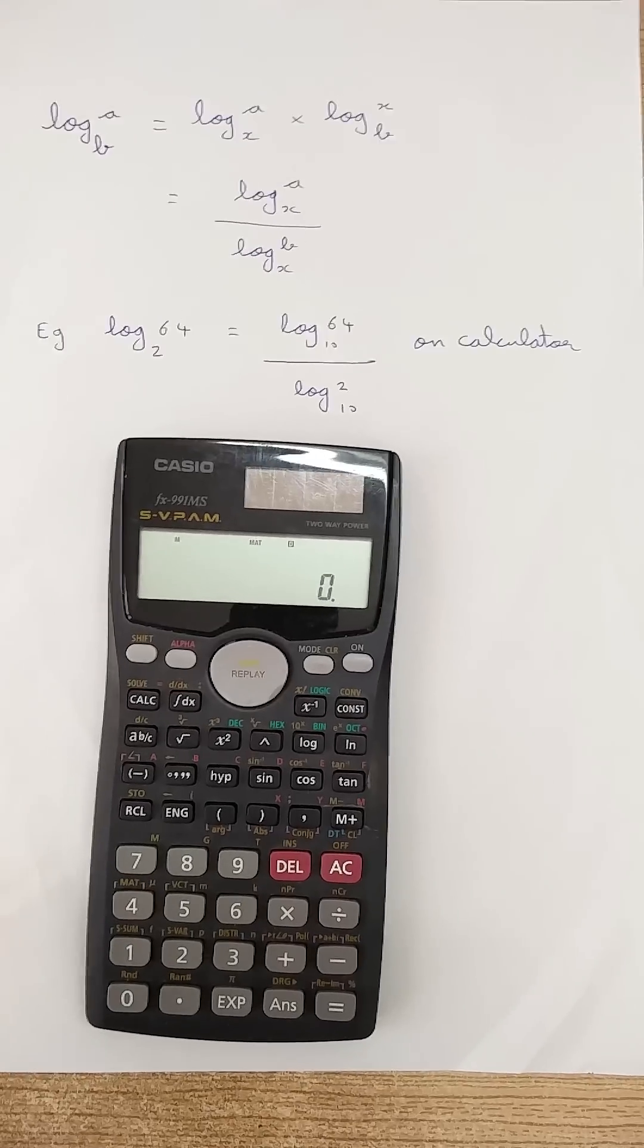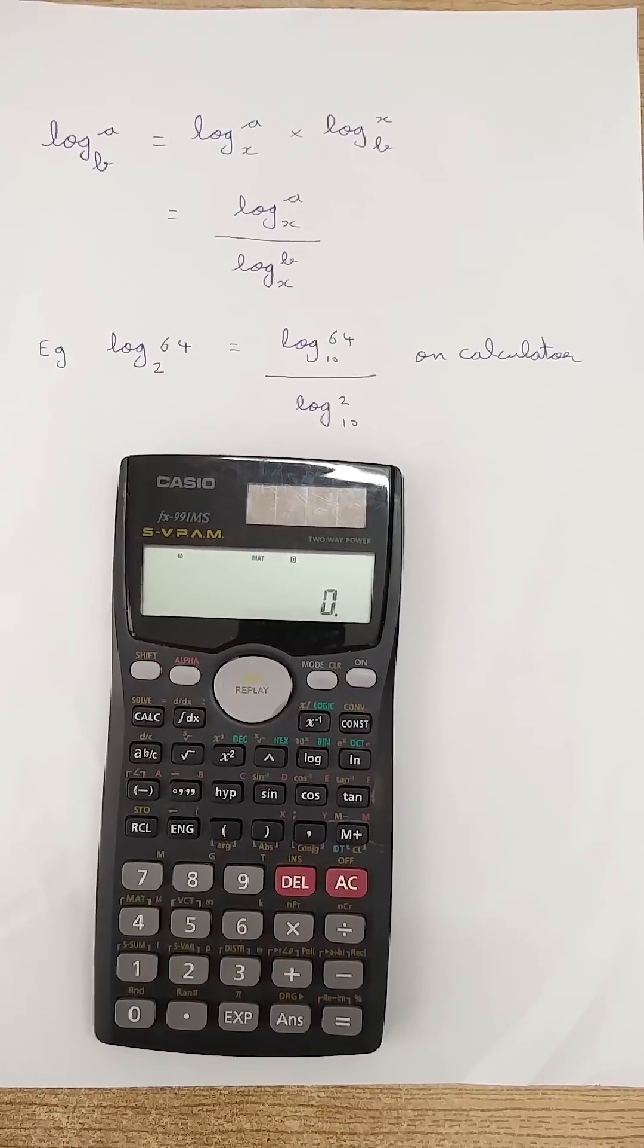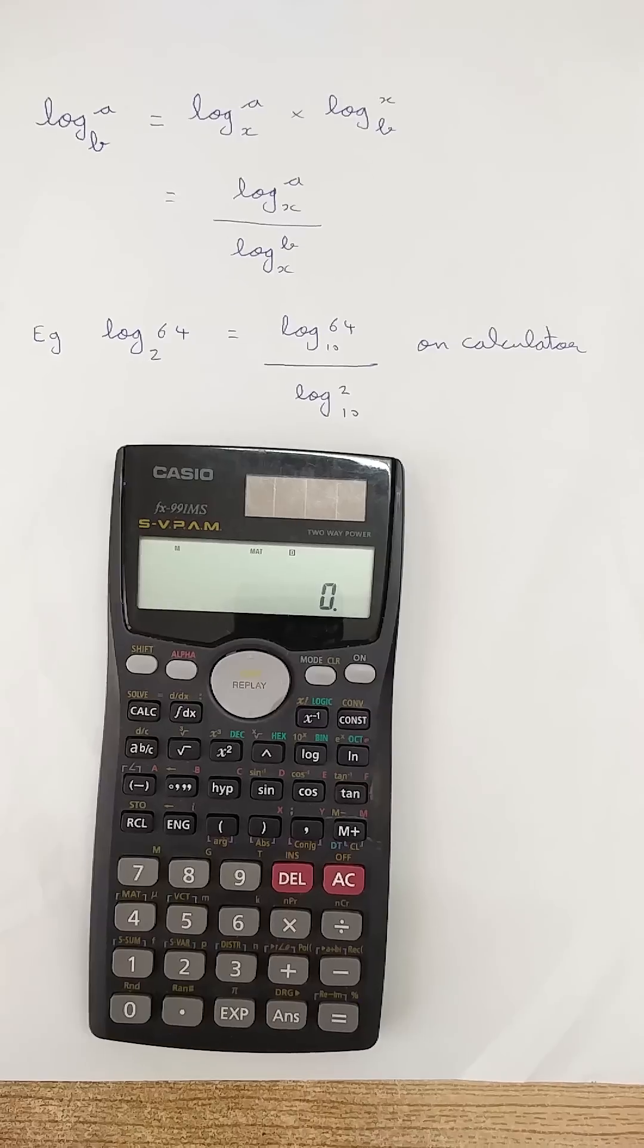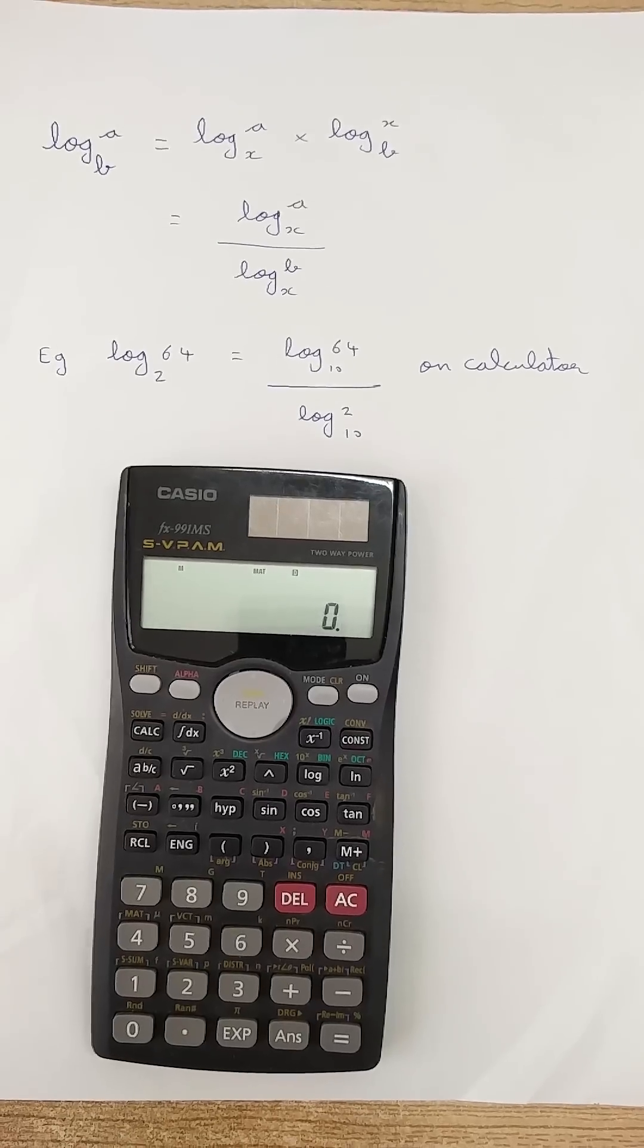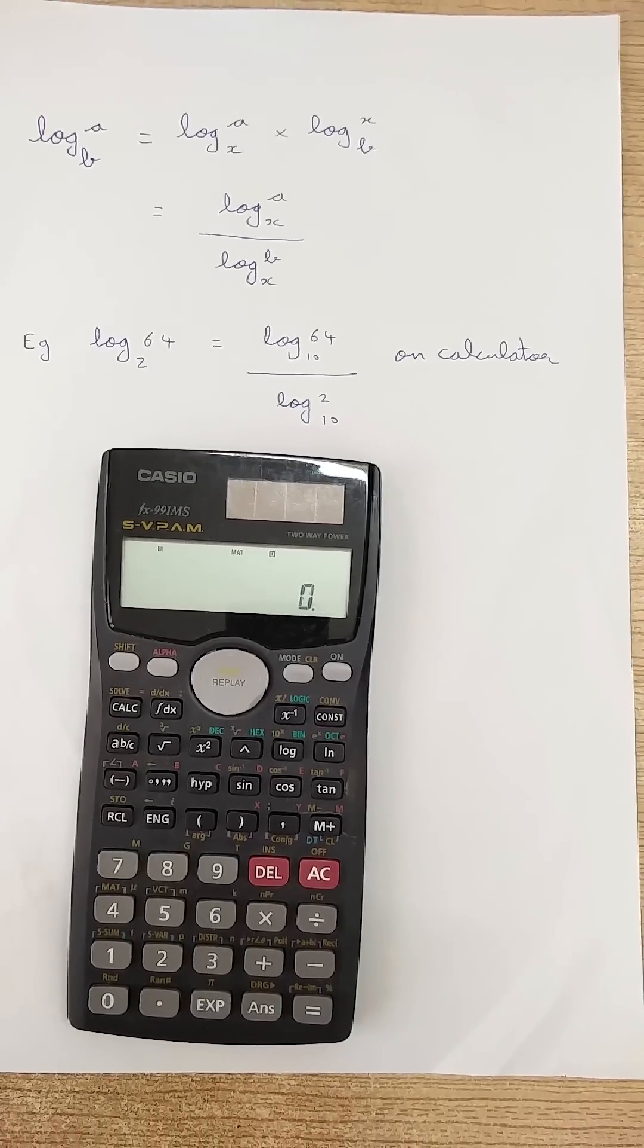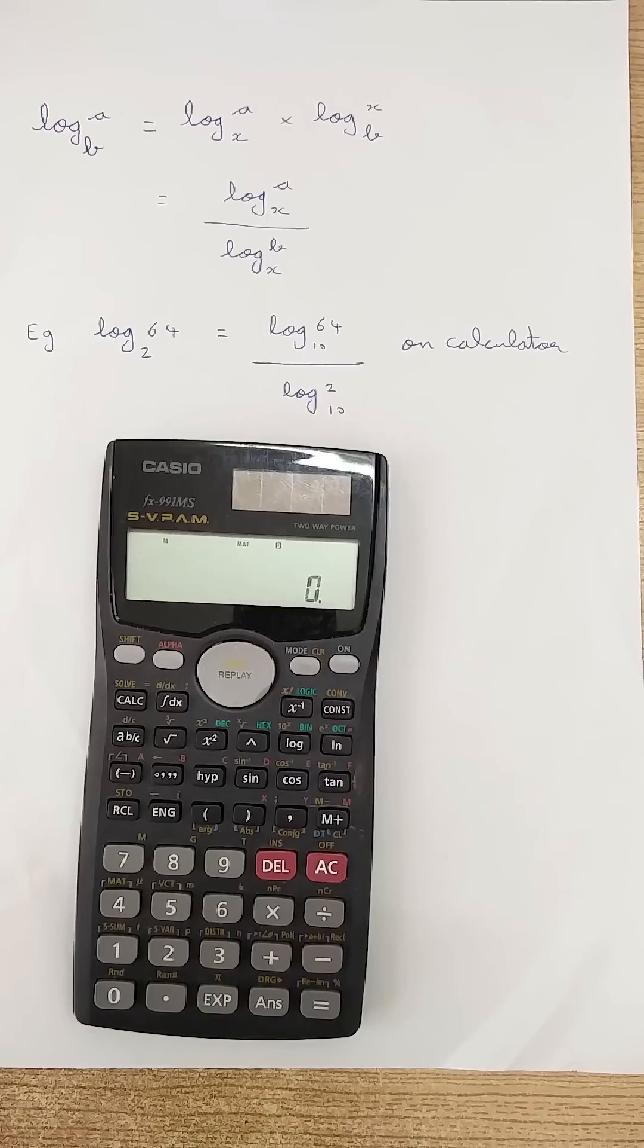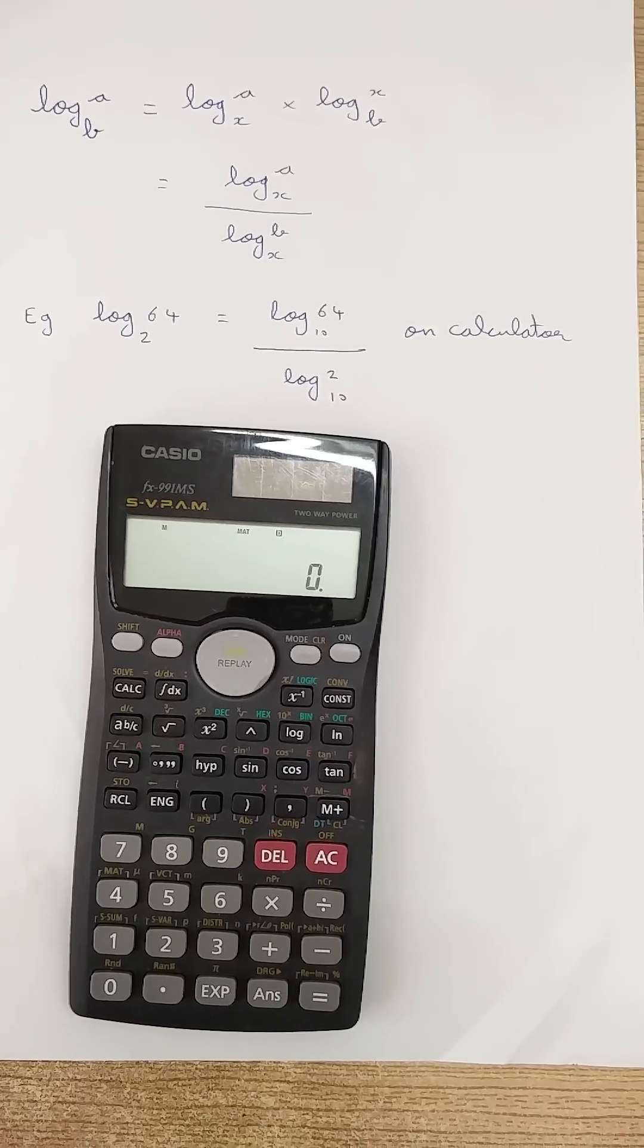So suppose we need to find log 64 to the base 2. We write it as log 64 base 10 divided by log 2 to the base 10, and hence we can find log 64 base 2.